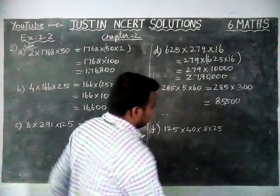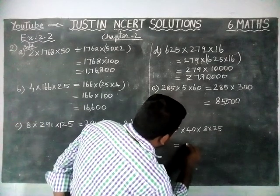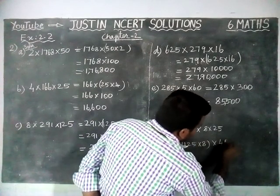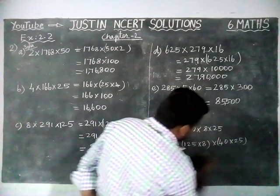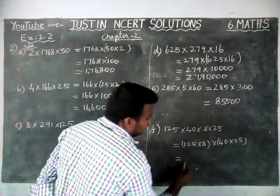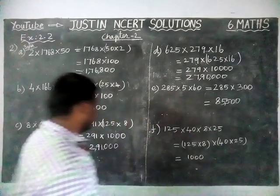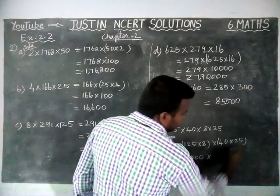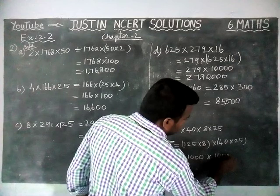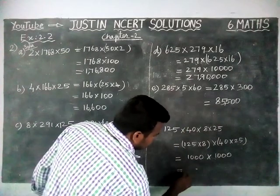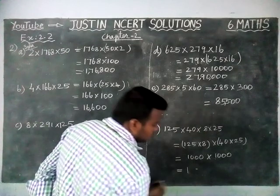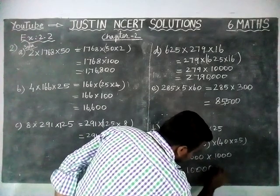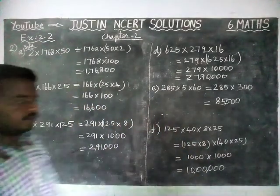Option F: 125 × 8 × 40 × 25. We interchange the places. 125 × 8 = 1,000 as we already saw. Then 40 × 25 = 1,000. So we have 1,000 × 1,000 = 1 with six zeros. The answer is 10,00,000, which is 10 lakh.